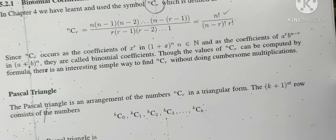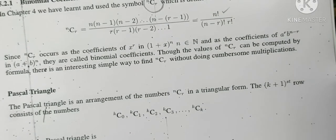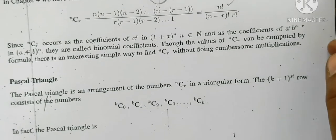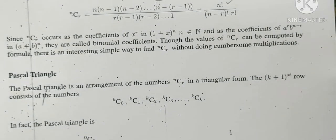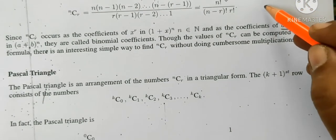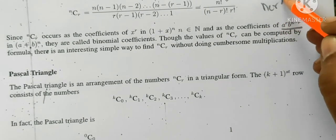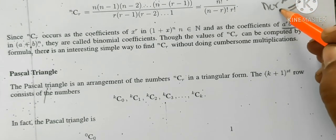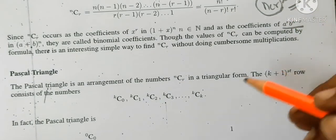Under binomial expression, we call this ncr times a to the power n minus r times b to the power r. This is a general term. This is a binomial coefficient.